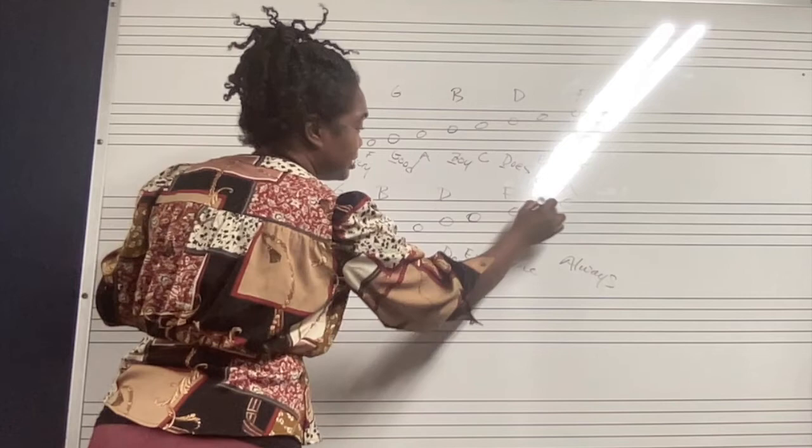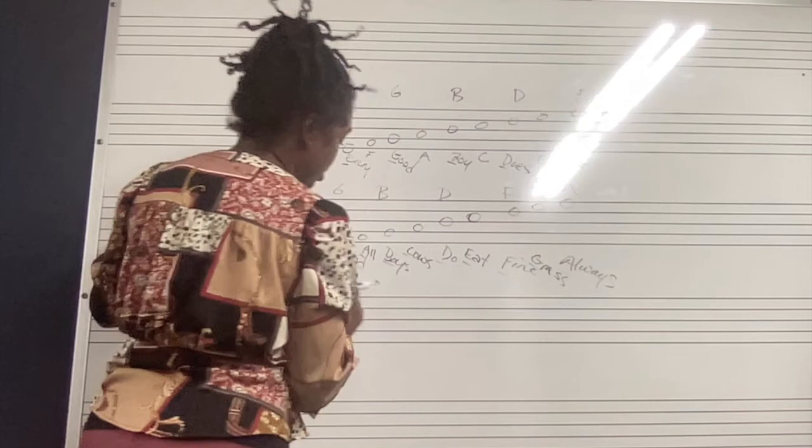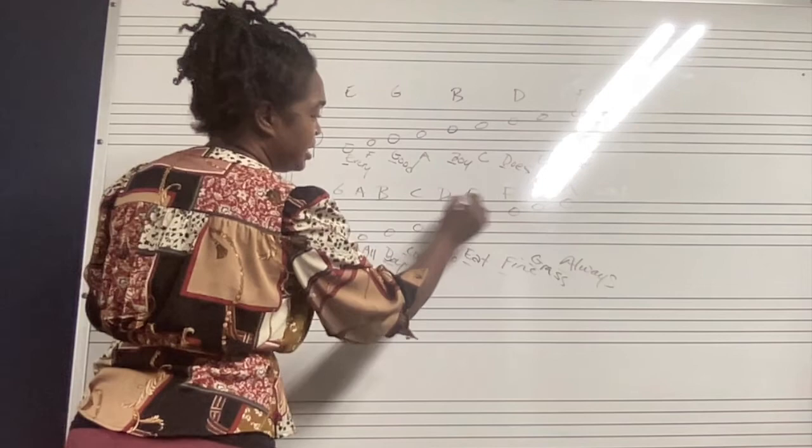Grass. So that would be a G. So that means it'd be G, A, B, C, D, E, F, G.